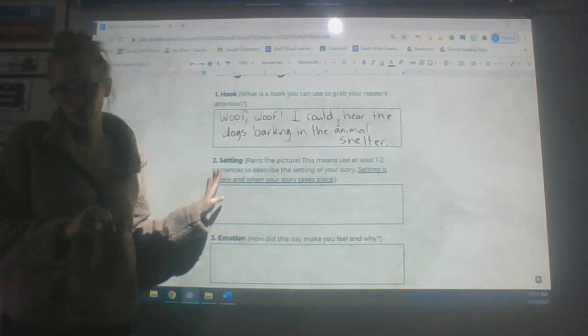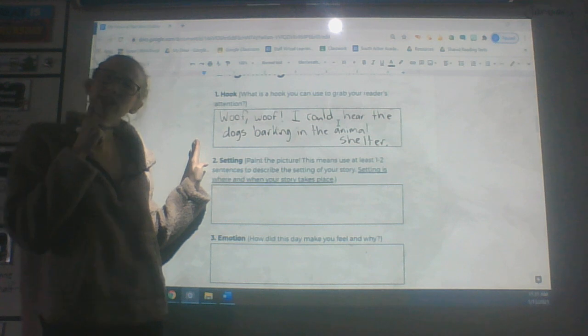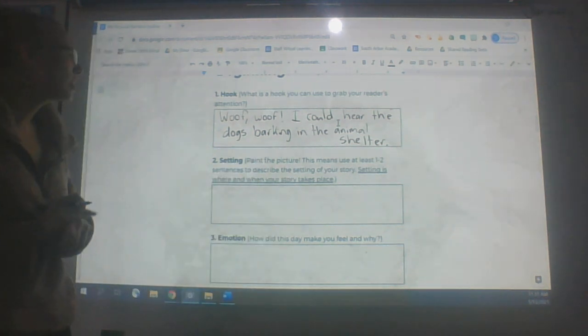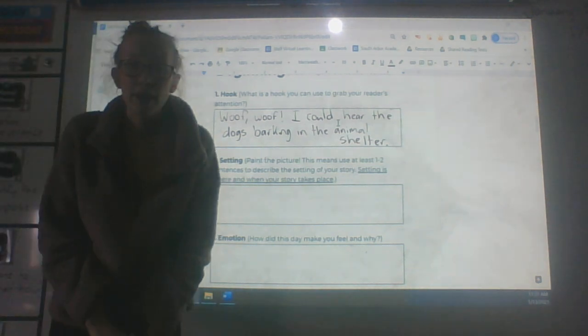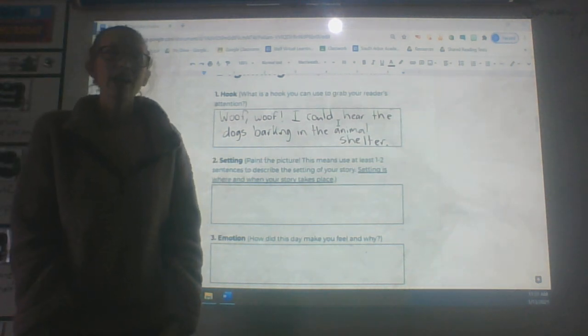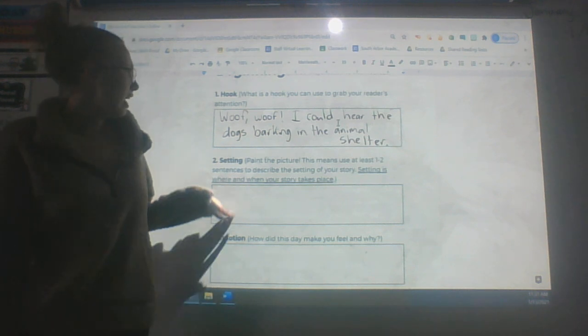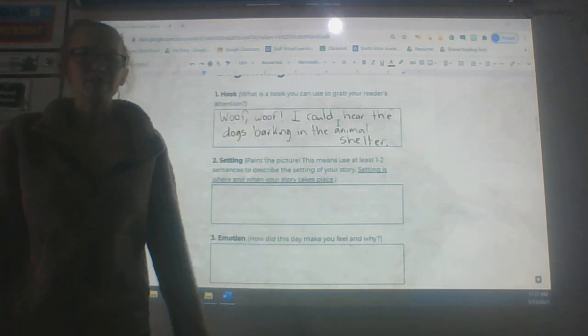Let's move to box two: setting. Paint the picture. This means use one to two sentences to describe the setting of your story. Setting is where and when the story takes place. I don't want to be boring and just say I was at the animal shelter. I'm going to give the reader details. I remember it was a nice summer day and I was at the Huron Valley Humane Society in Ann Arbor.